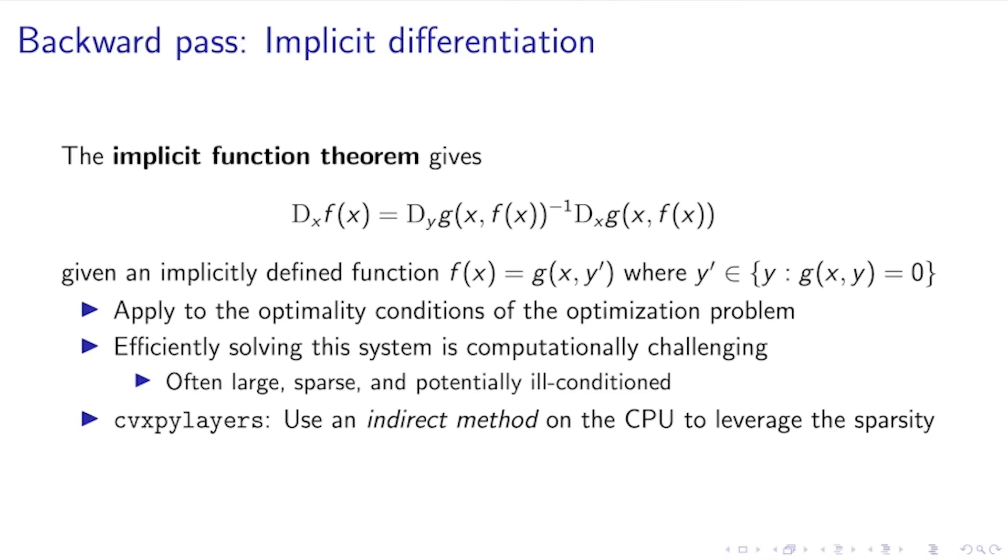In our latest work in CVXPyLayers, our current approach is to use an indirect method on the CPU that leverages some of the sparsity and some of the other structures of the operations that we know come up in the optimization setting, so that we never have to explicitly form the matrix derivative with respect to y, or makes it also so that we never have to invert this. This also leverages the problem or the instance-specific sparsity that we otherwise wouldn't be able to leverage, especially if we were using GPU operations.